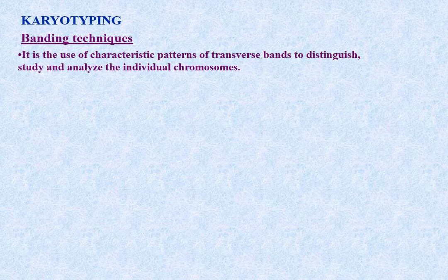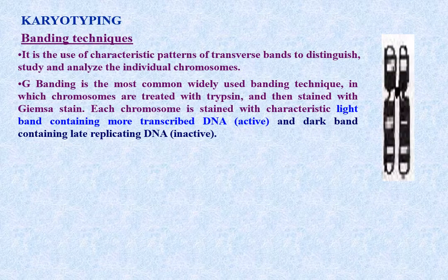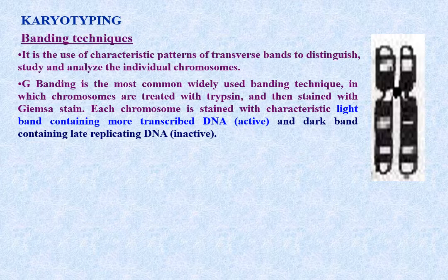Banding techniques: this involves the use of characteristic patterns of transverse bands to distinguish, study, and analyze individual chromosomes. G-banding is the most commonly used banding technique, in which chromosomes are treated with trypsin and then stained with Giemsa stain. Each chromosome is stained with characteristic light bands containing more transcribed (active) DNA.